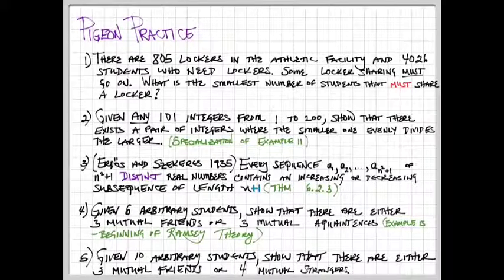Number 4, this is an example that's the beginning of Ramsey theory. It's the classic party problem. Given 6 arbitrary students, show that there are either 3 mutual friends or 3 mutual acquaintances.